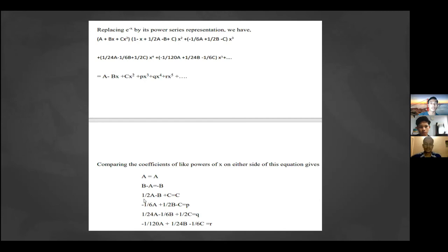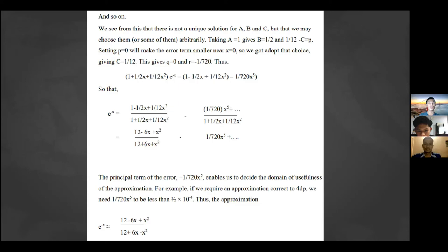We see from this that there is not a unique solution for A, B, and C. This means there is no single solution that we can find, but we may choose them or some of them arbitrarily.